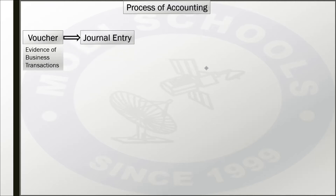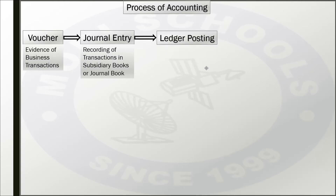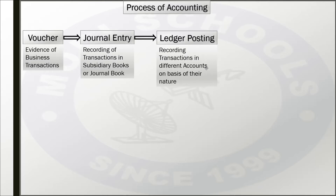After the voucher, we pass journal entries. A journal entry is nothing but the recording of transactions from vouchers into either subsidiary books or the journal book. After journal entry, we move to ledger posting. In ledger posting, all transactions of similar nature are transferred to a single account — for example, all journal entries related to purchases go to the purchase account, and all entries related to salary go to the salary expense account.